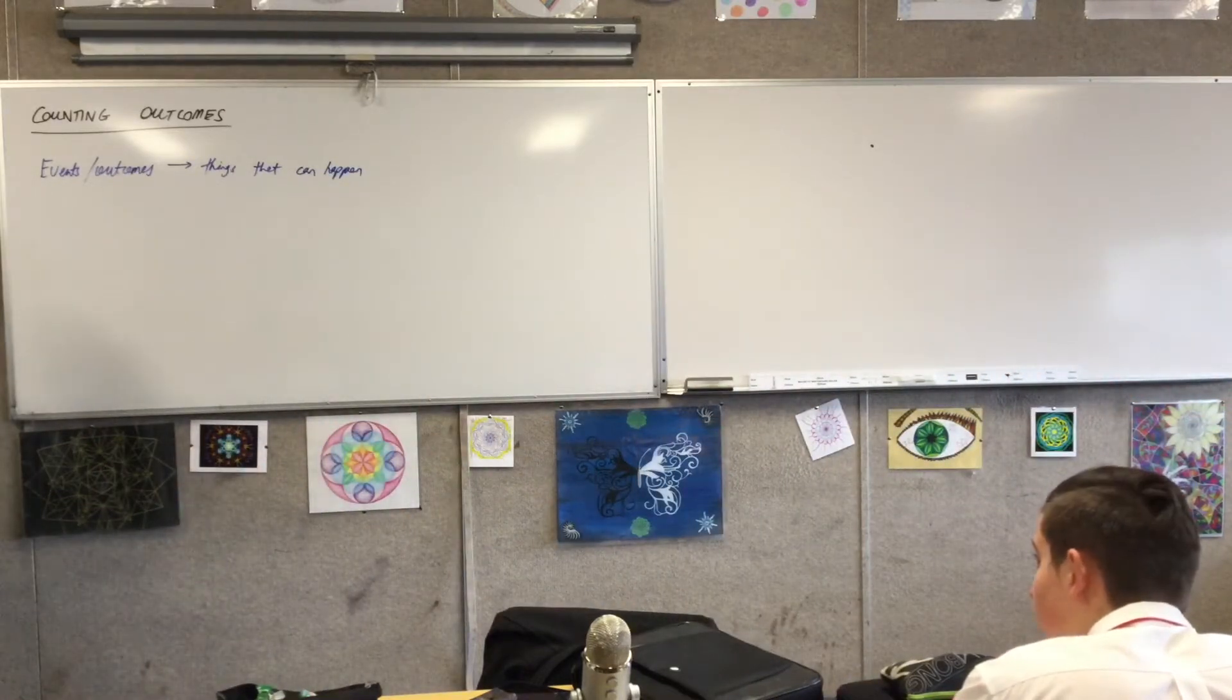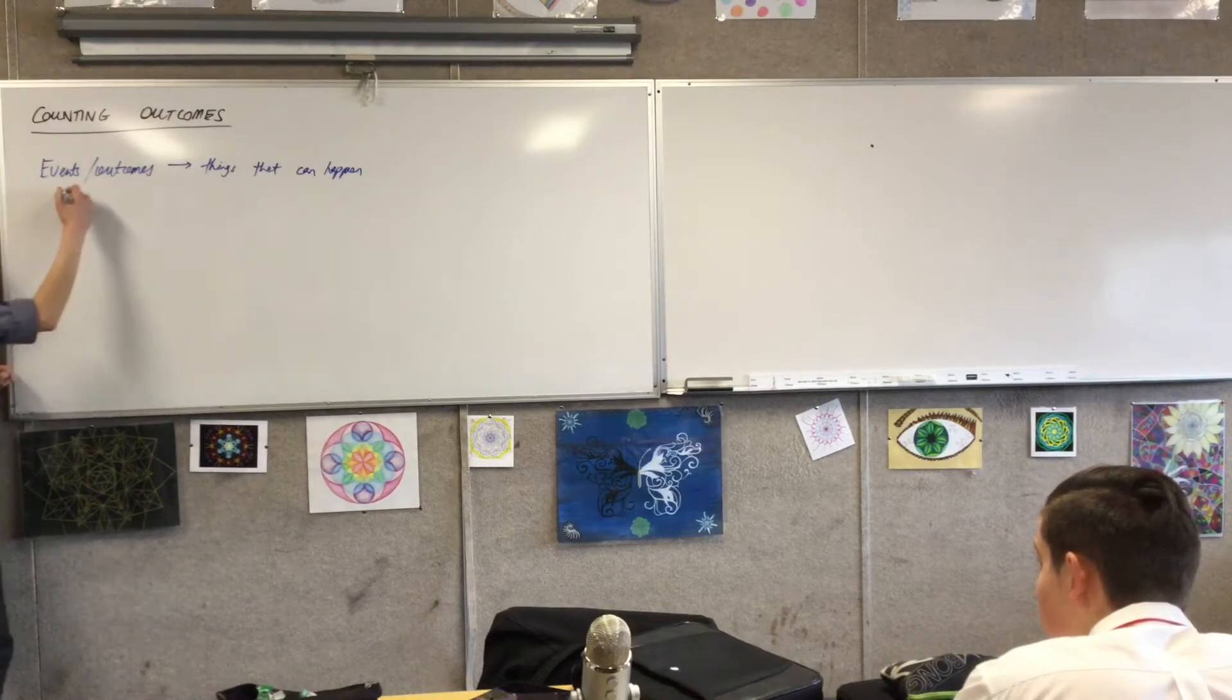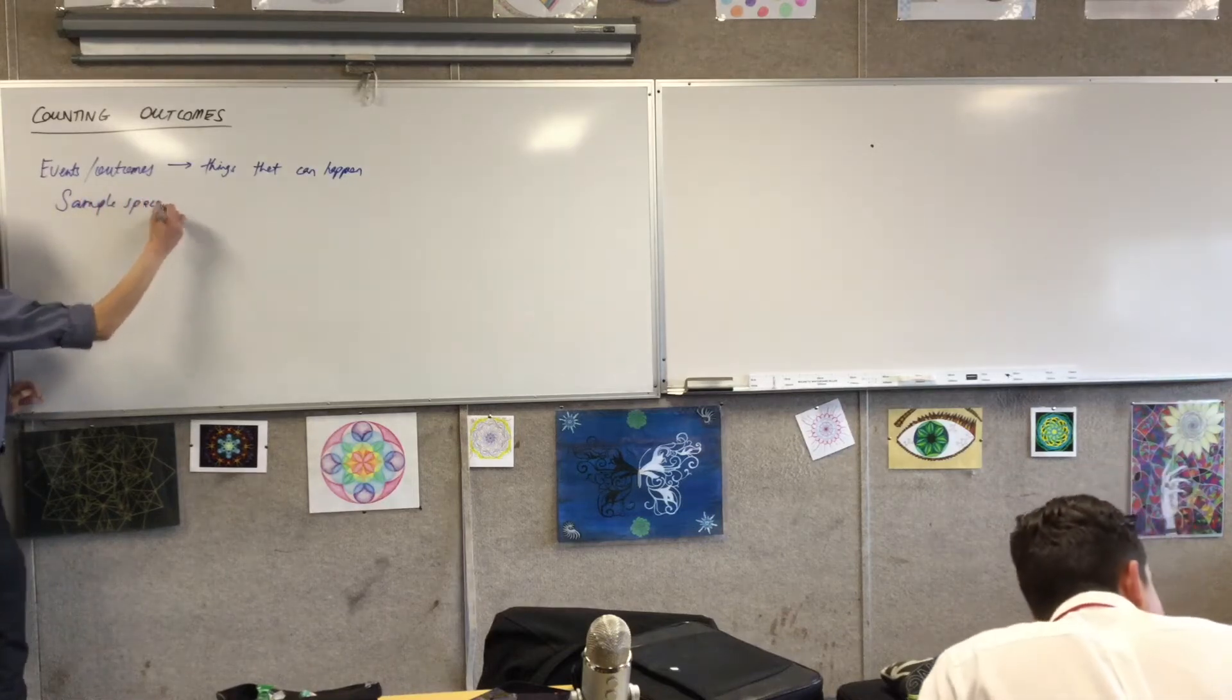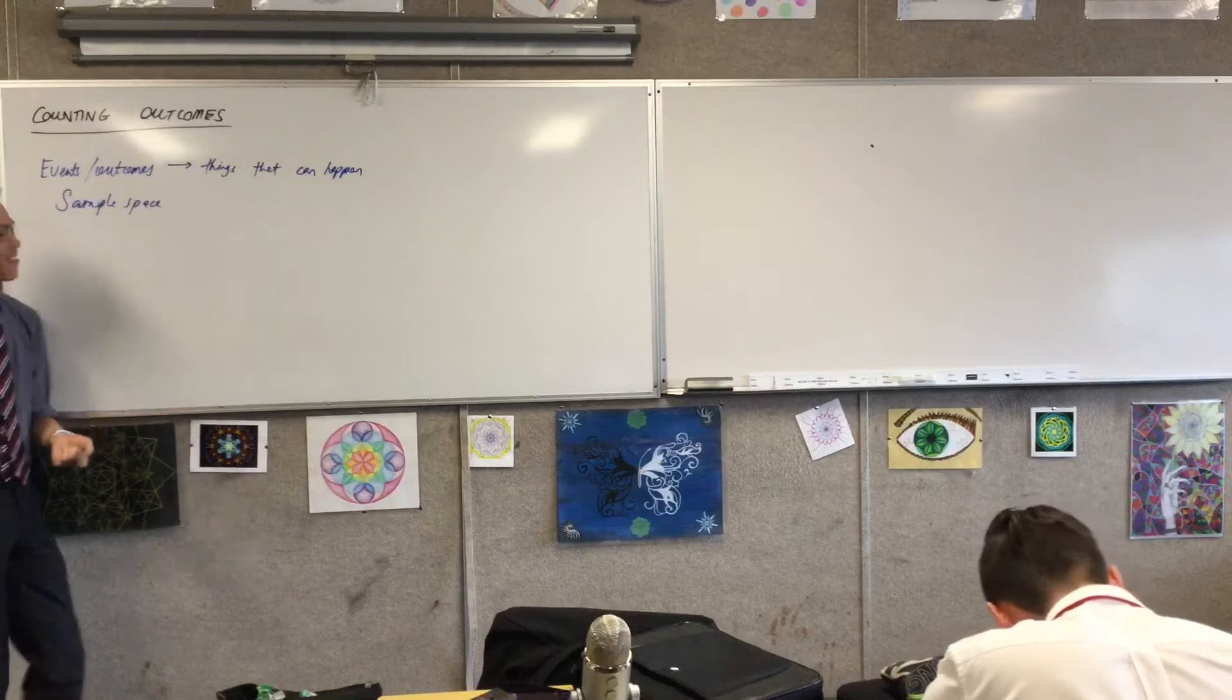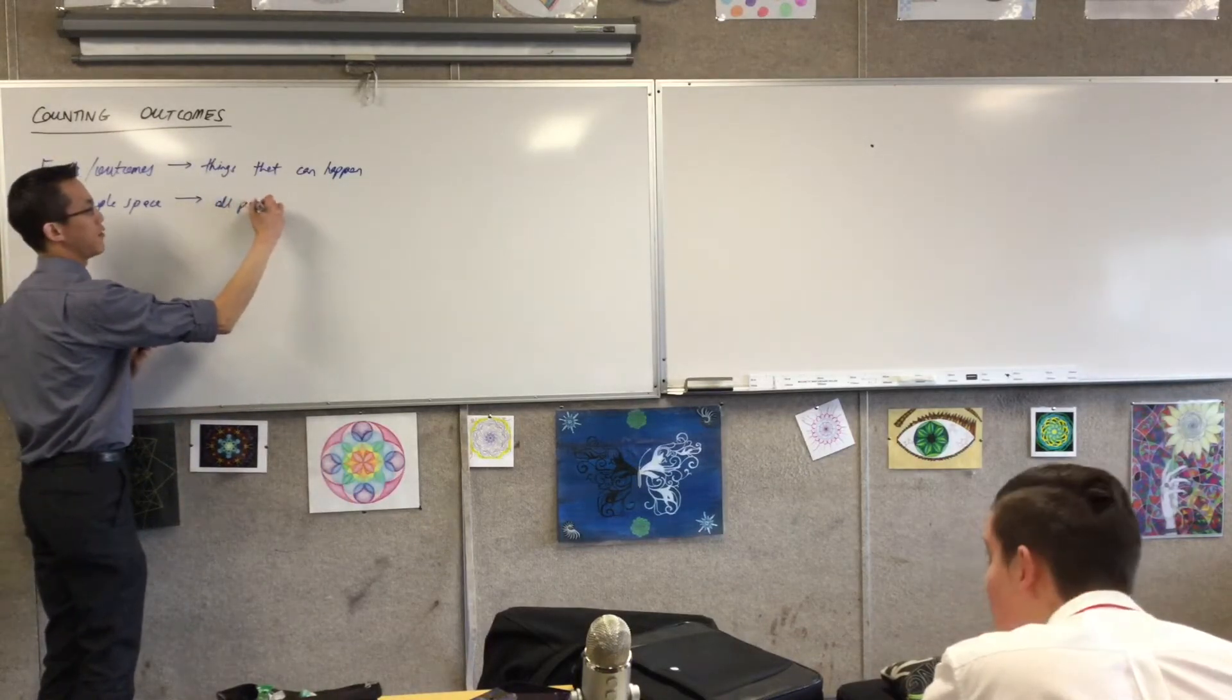And we call it, remember, starts with an S, all the events that could possibly happen. We call it the sample space. Okay, so this should be, this is elementary for the people who are here on Wednesday, right? Sample space is all possible events or outcomes.